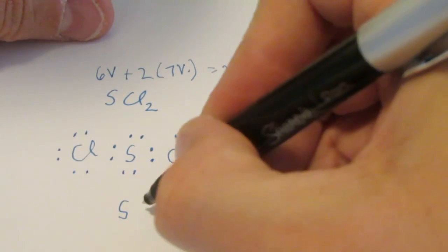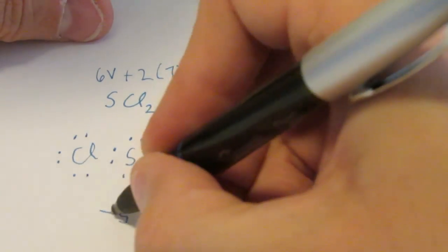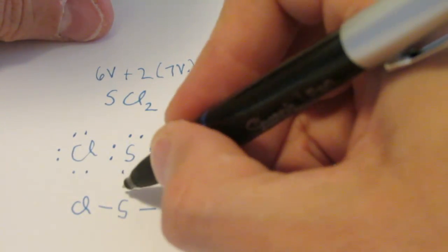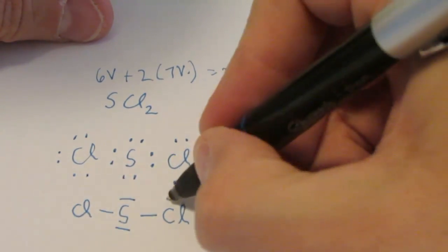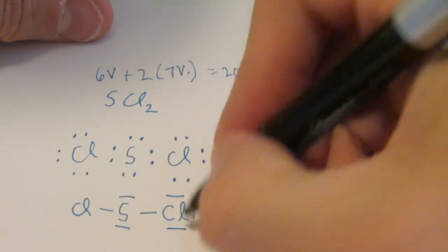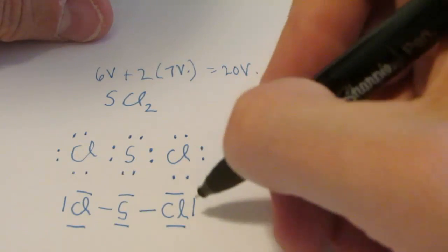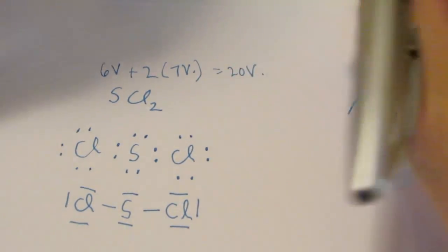Now often times you'll see it written like this where we take those 2 dots and we make it a solid line connected to each chlorine. Don't forget the non-bonding pairs. We could either use dots or we can use lines to represent those. Remember each line represents 2 electrons. Either this version or this version is just fine with me.